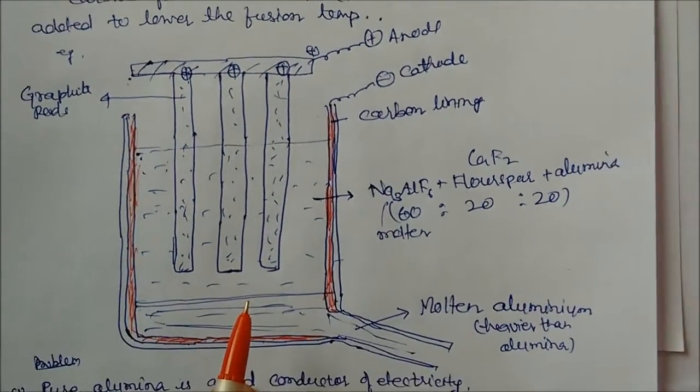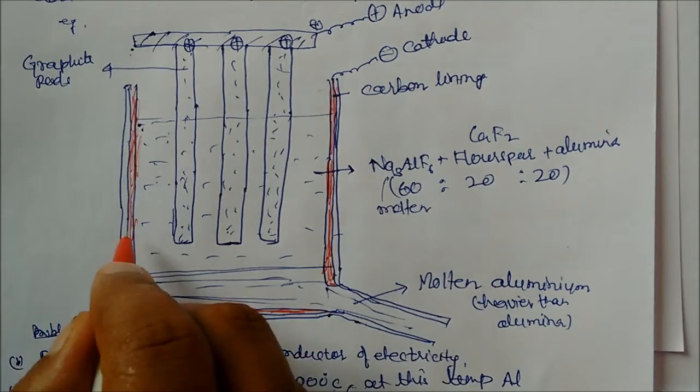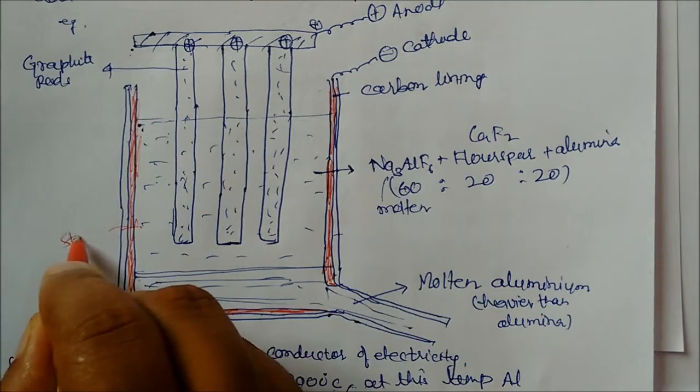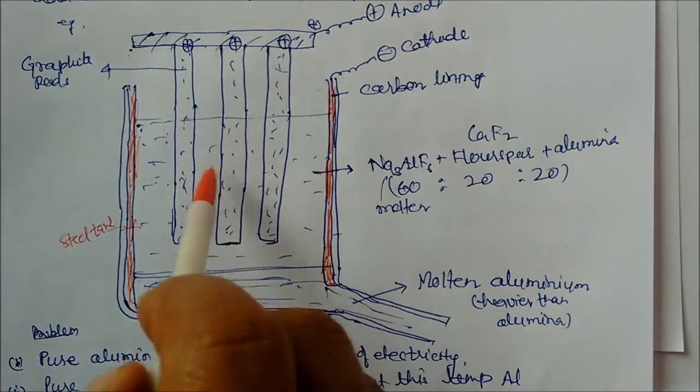You can see this diagram. In this diagram, we can see one big tank is there. This is your steel tank. In this tank, we can see this is your graphite rods. Three graphite rods.